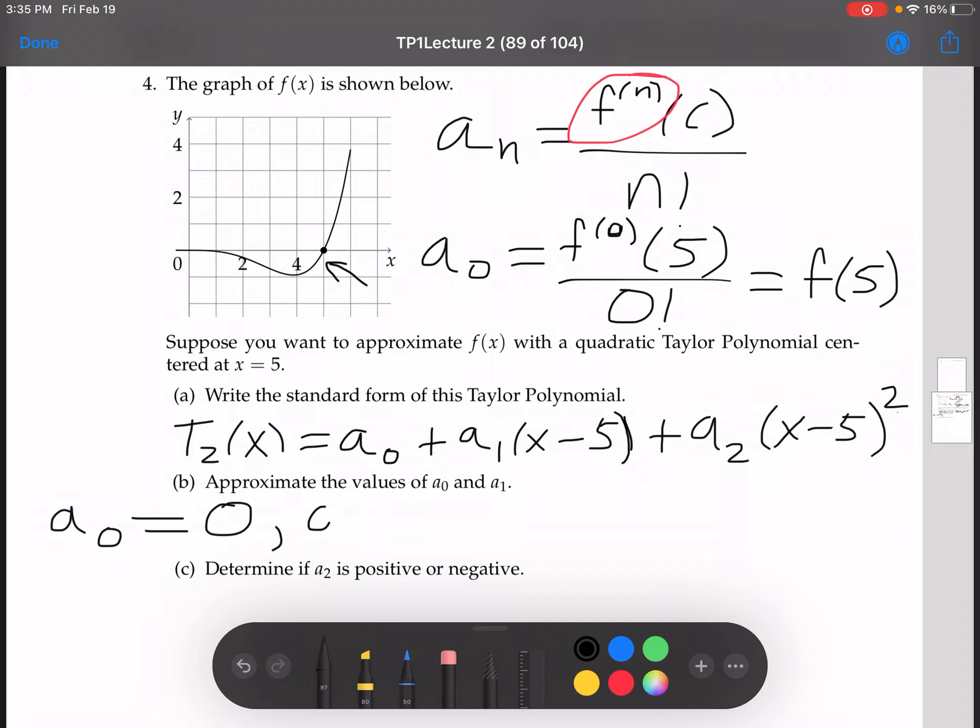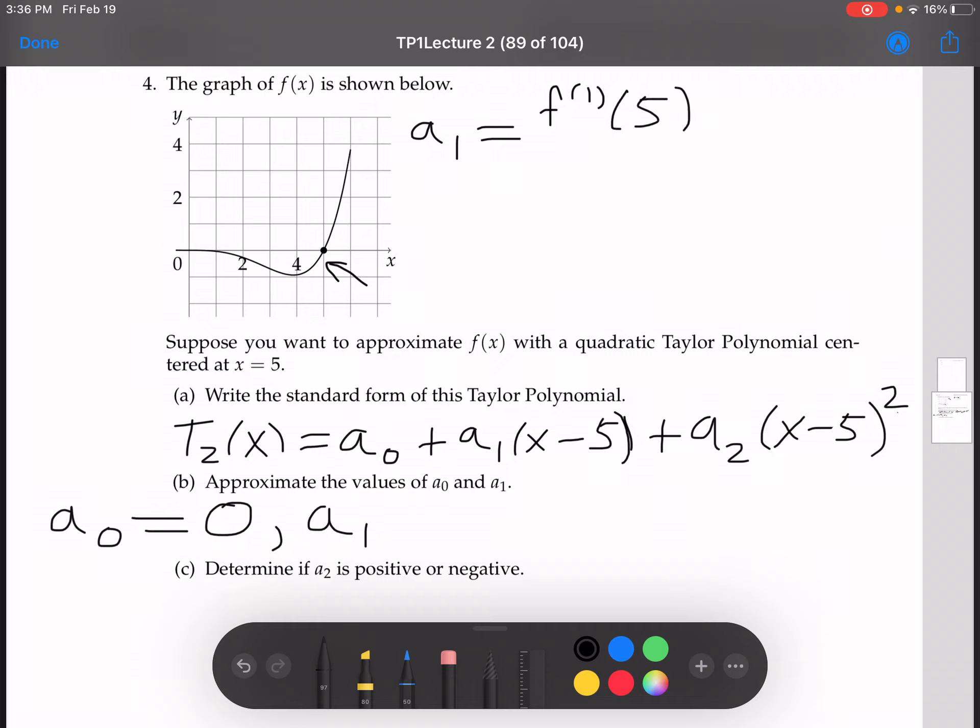And then we'll find a1. So a1, using the same formula again, a1 is f to the first derivative, so f prime of 5 over 1 factorial. Remember, 1 factorial is 1. So this is really just f prime of 5. So a1 is f prime of 5, and we're going to approximate f prime of 5. Remember, f prime is the slope of the tangent line.